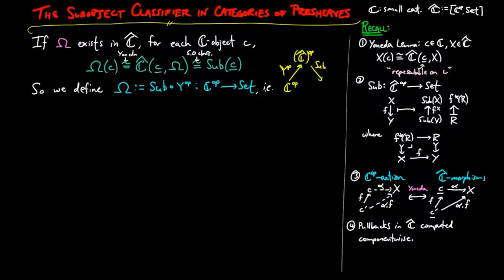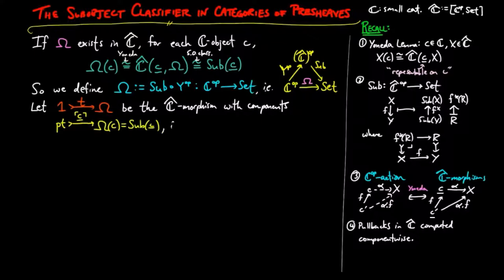The generic sub-object T of omega is the C-hat morphism with components which pick out the identity sub-objects for each object C. In other words, T on component C names the representable on C, which is the terminal object in the category sub-underline C for each object C.